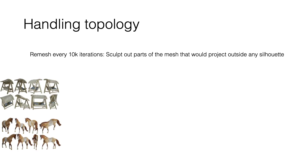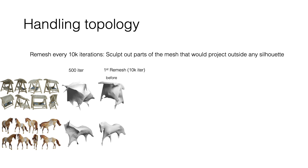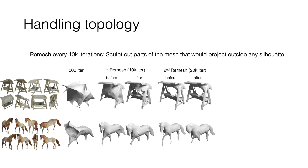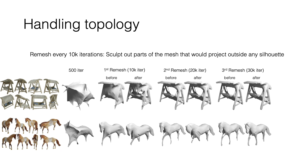Here is the evolution of shape of two objects. After being initialized with a sphere, at 500 iterations the object is just beginning to take shape. Before the first remesh at 10,000 iterations, the mesh — which is still homeomorphic to a sphere — resembles a swing and a horse but lacks detail. Parts of these meshes that project outside silhouettes are sculpted out and iterative optimization is resumed. This process is repeated at 20,000 and 30,000 iterations to get the final meshes of a swing and a horse.